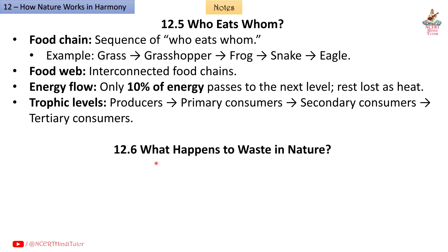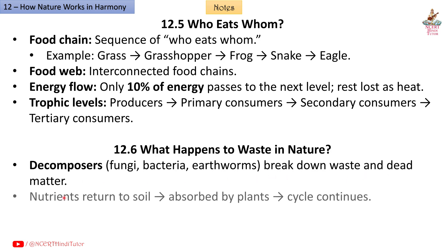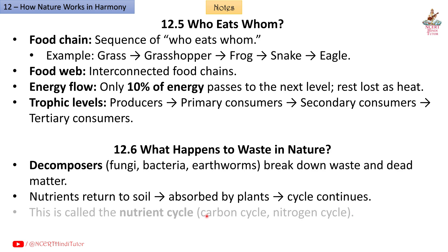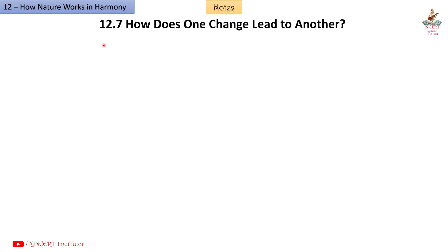12.6: What happens to waste in nature? Decomposers — fungi, bacteria, earthworms — break down waste and dead matter. Nutrients return to the soil and are absorbed by plants, and the cycle continues. This is called the nutrient cycle — carbon cycle, nitrogen cycle. Nothing goes to waste in nature.